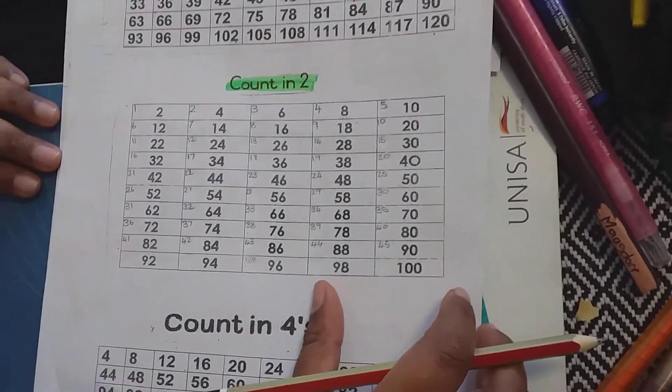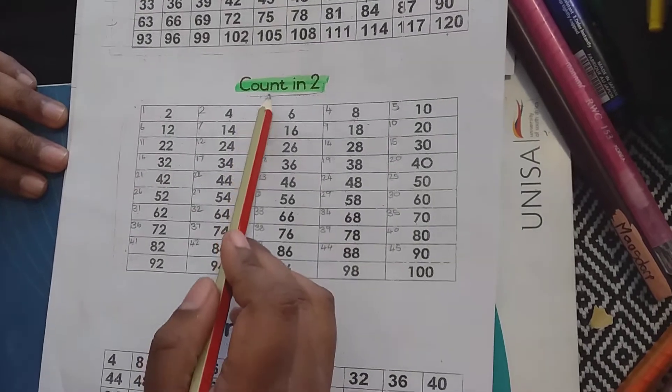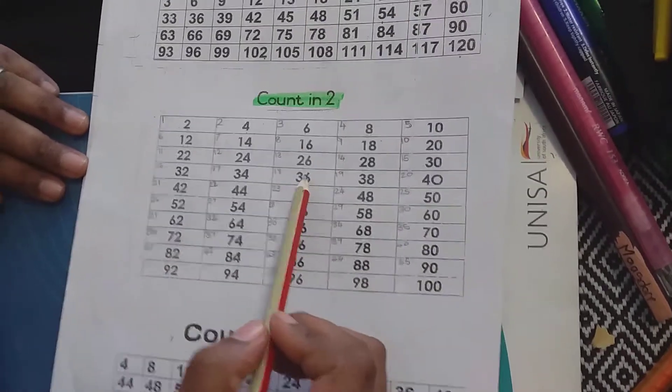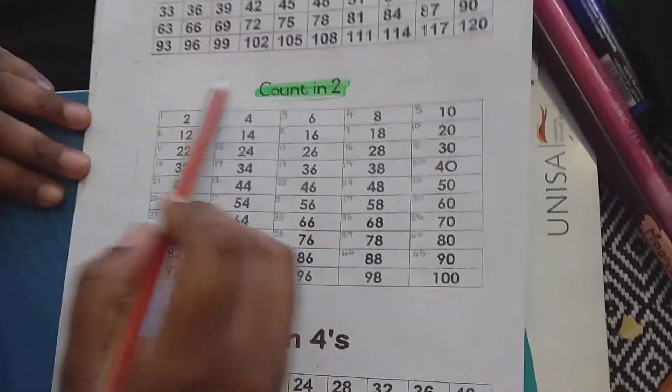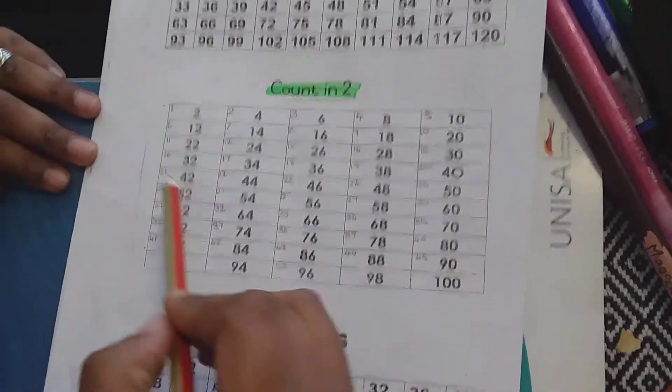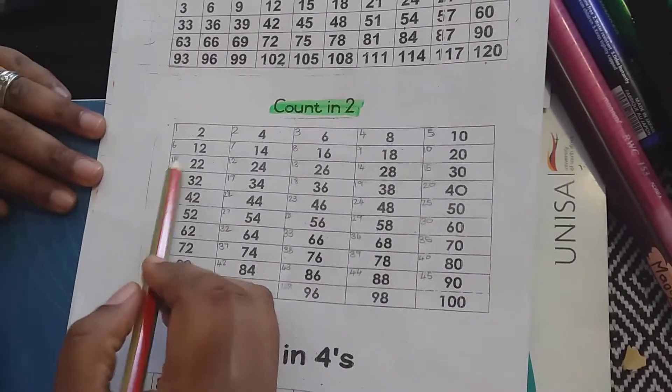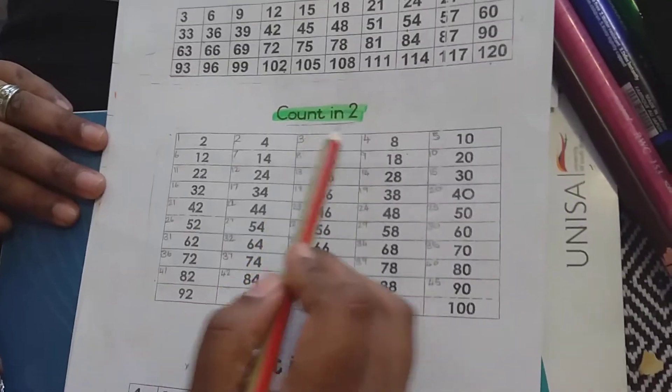Good afternoon grade 3's. I ask you to go to your counting chart and write your numbers like I did here. So we did the counting in twos. Let's just concentrate on counting in twos first. 1, 2, 3, 4.